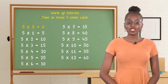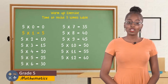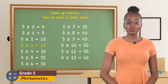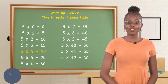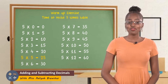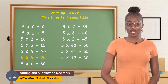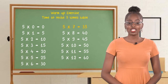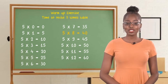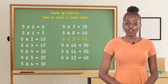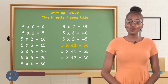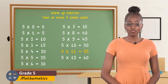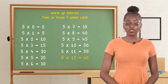5 times 0 is 0. 5 times 1 is 5. 5 times 2 is 10. 5 times 3 is 15. 5 times 4 is 20. 5 times 5 is 25. 5 times 6 is 30. 5 times 7 is 35. 5 times 8 is 40. 5 times 9 is 45. 5 times 10 is 50. 5 times 11 is 55. 5 times 12 is 60.